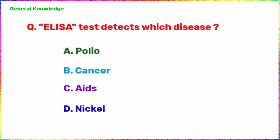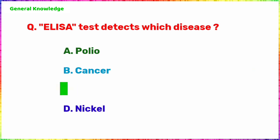The ELISA test detects which disease? The correct answer is Option C, AIDS.